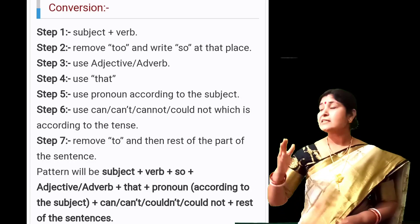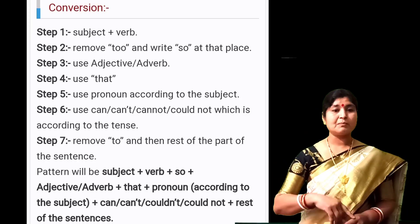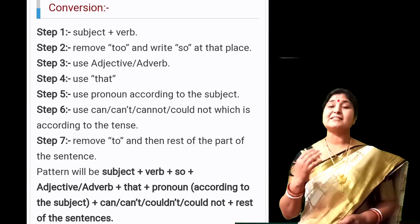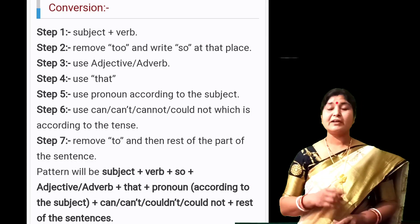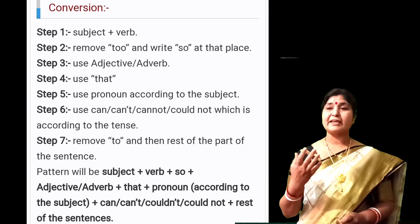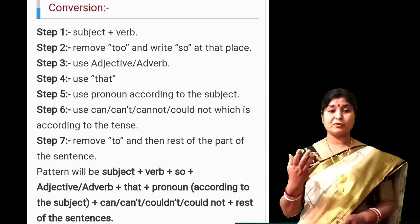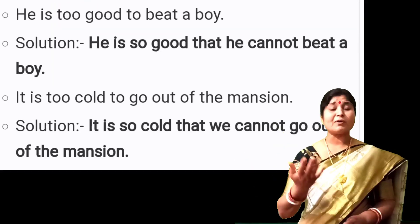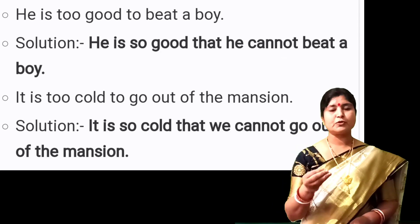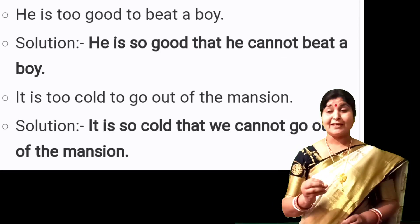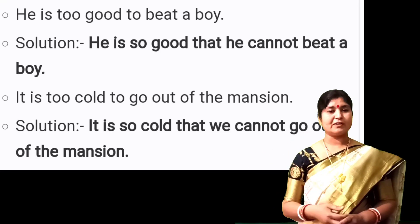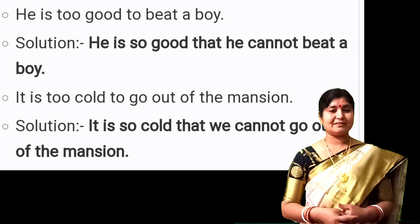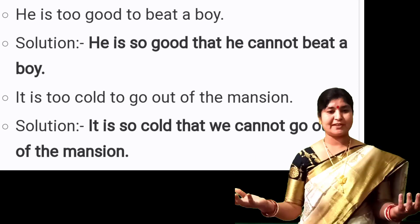The pattern becomes: subject plus verb plus so plus adjective or adverb plus that plus pronoun according to the subject, then can, cannot, or could not, and the rest of the sentence. For example, 'He is too good to beat a boy' becomes 'He is so good that he cannot beat a boy.'